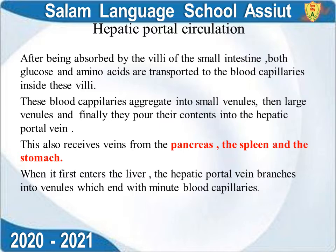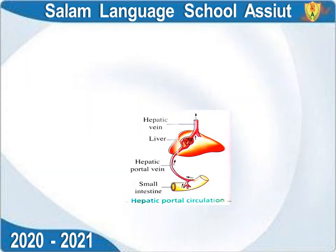The hepatic portal vein delivers blood to the liver. Blood then exits the liver through hepatic veins, which join the inferior vena cava, returning blood from the upper body and liver back to the heart.